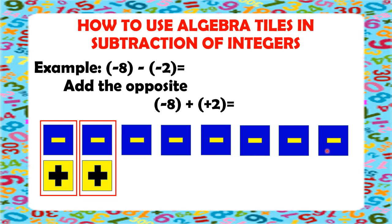So, let's count how many tiles we have left — we have 1, 2, 3, 4, 5, and 6. We have 6 blue tiles left, and that means negative 6. Therefore, negative 8 plus positive 2 equals negative 6.